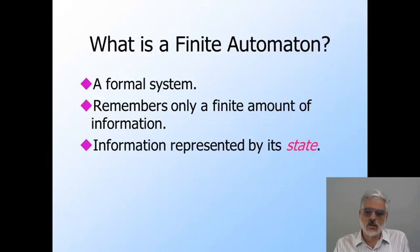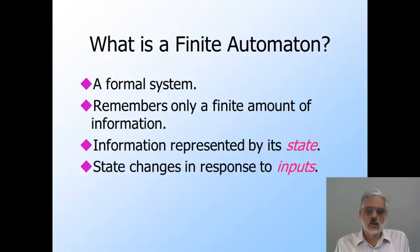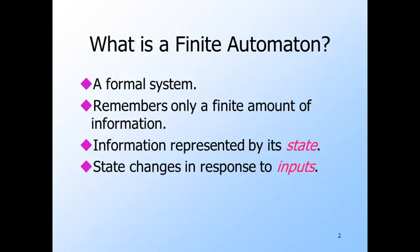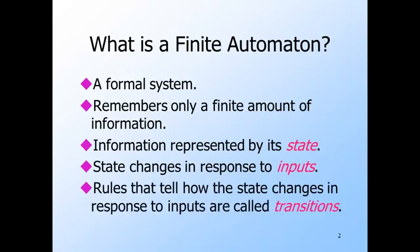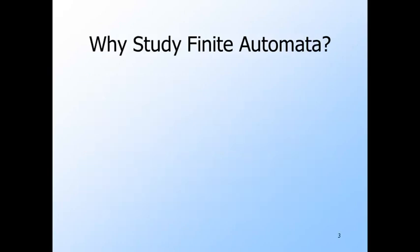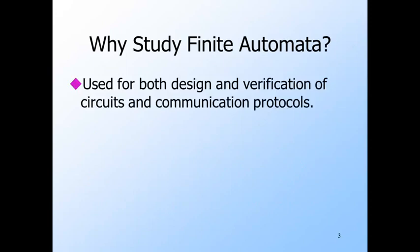That ability lets us tell, for example, whether there are input sequences that cause an automaton to get to an error state, which in turn lets us check whether protocols or other simple systems have flaws. A finite automaton is built around a finite collection of states. Each state has a name, and that name represents what is remembered about its history. States change in response to inputs — either characters if we're processing text, or events if we are modeling something like a communication protocol.